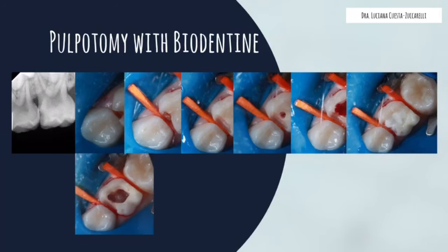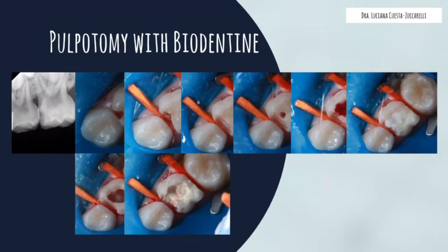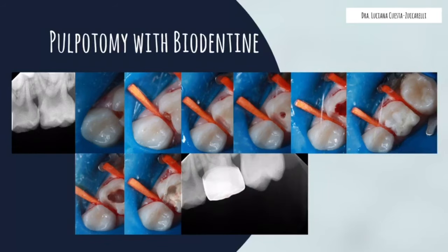I clean, dry, and control pulpal hemorrhage through moderate pressure with a dry sterile cotton ball. After that, I evaluate the bleeding and the integrity of the floor of the pulp chamber. While doing that, I mix Biodentine cement following the manufacturer's instructions, then transport and place the cement in the pulp chamber through an amalgam carrier. I adapt the material into the walls and floor of the pulp chamber by pressure with a sterile cotton pellet. I cement the crown with glass ionomer and obtain a bitewing or periapical radiograph once the treatment is finished.